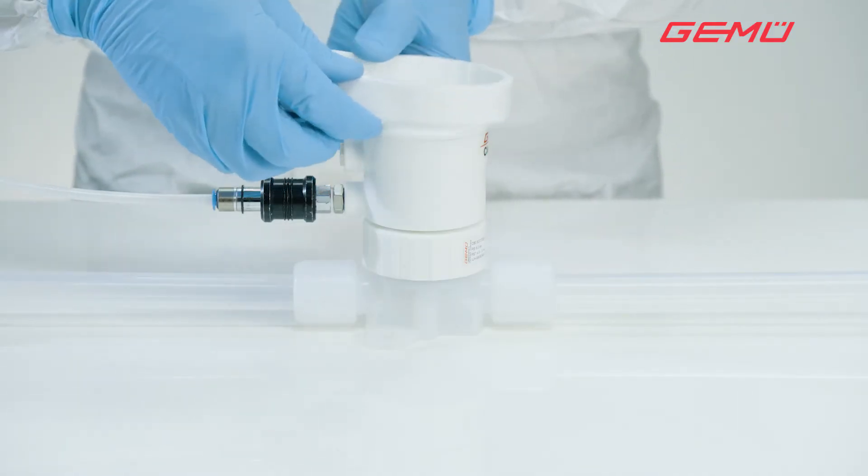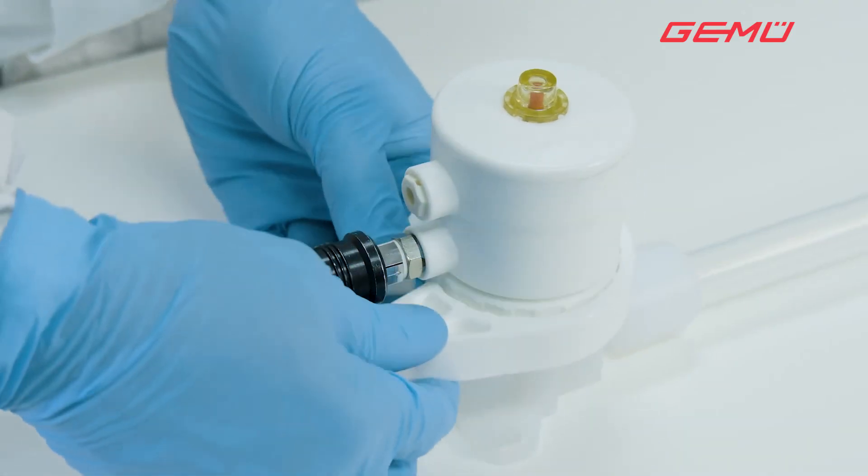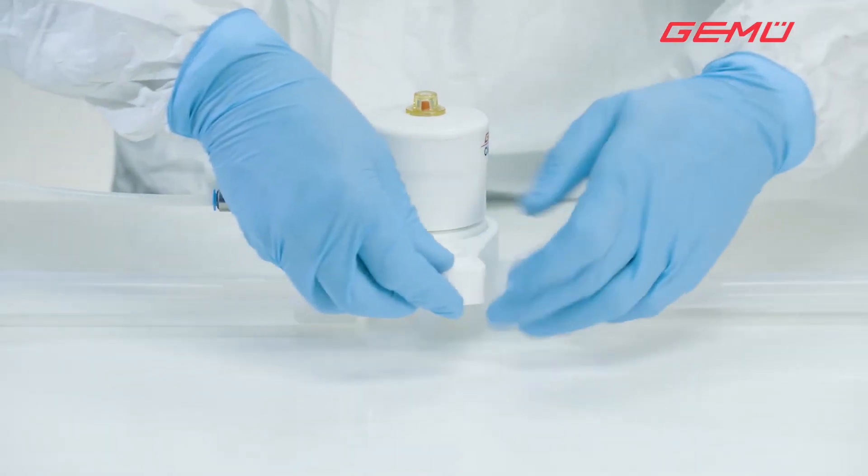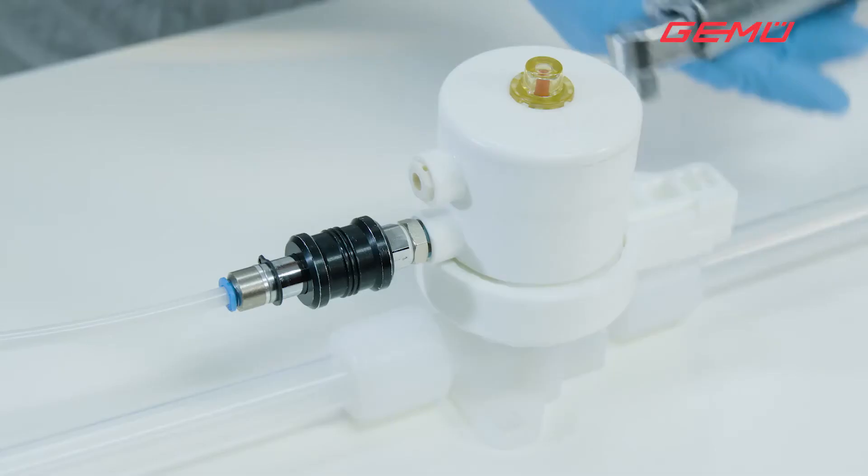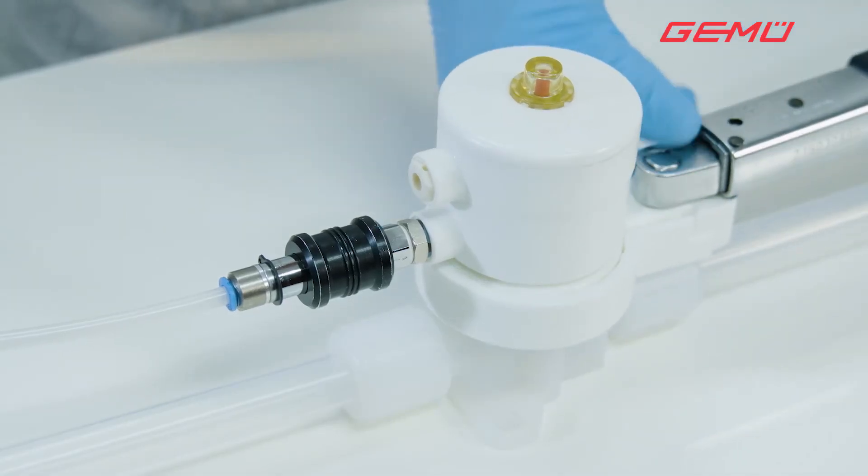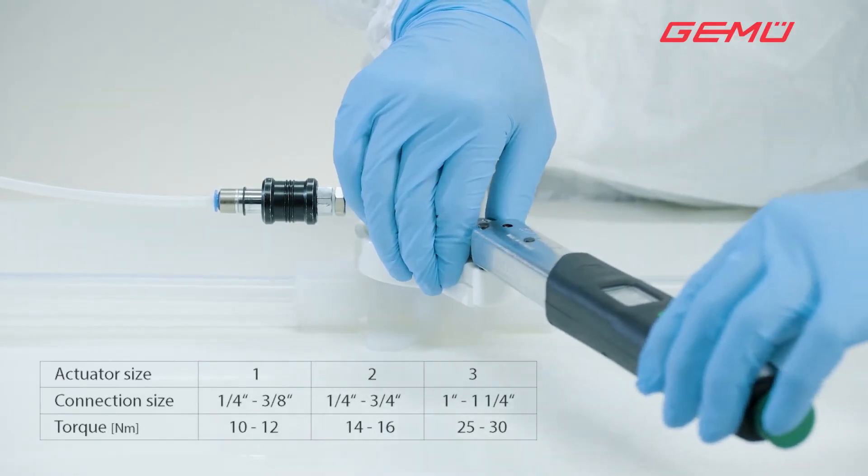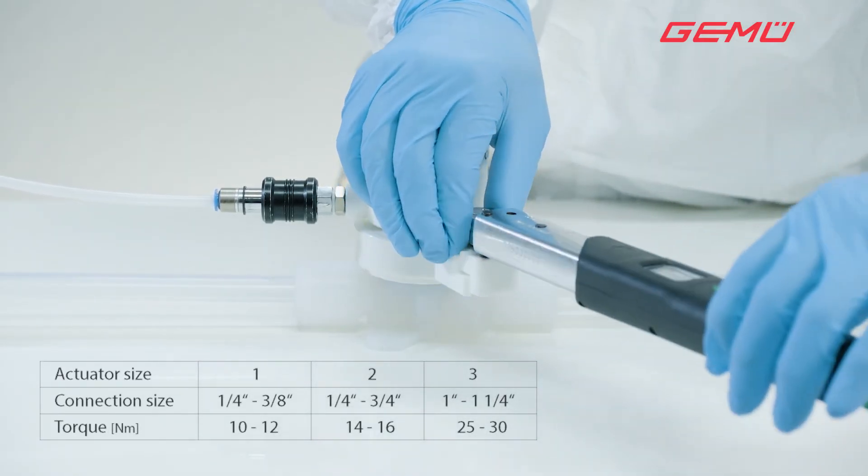Position the GEMÜ service tool in the correct position on the central nut and attach the torque wrench in the extension for the service tool handle. Failure to do so will result in an incorrect torque. Tighten the central nut to the specified torque.